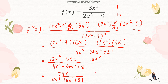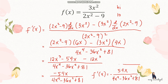Simplifying the numerator: 12x cubed minus 54x minus 12x cubed. The 12x cubed terms cancel, leaving negative 54x. So f prime of x equals negative 54x over (4x to the 4th minus 36x squared plus 81).